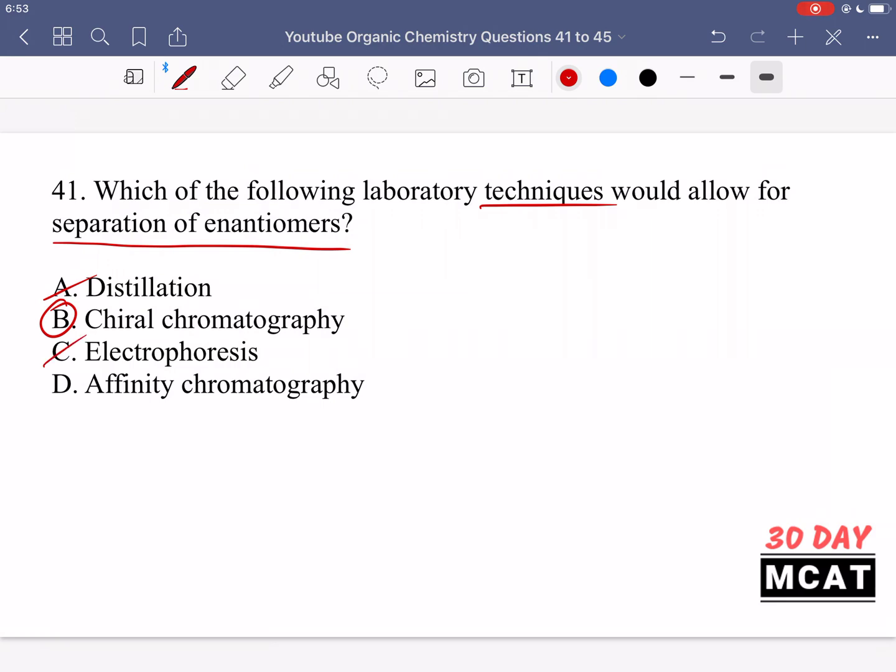Electrophoresis is based on separating things due to charge, and that's going to be the same for enantiomers. Affinity chromatography binds to specific substances which the resin has an affinity for, and once again enantiomers are going to react in a similar way, so they should have similar affinity as well. So B is the best answer for question 41.